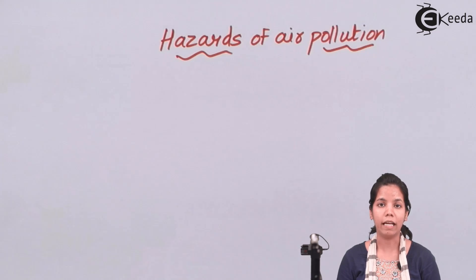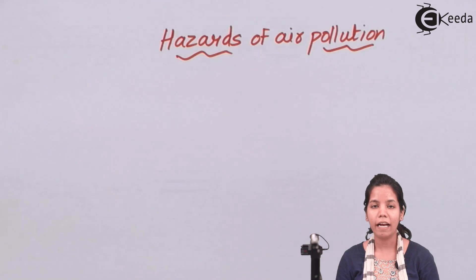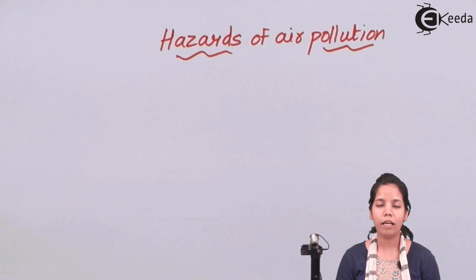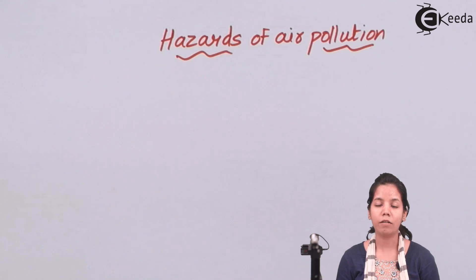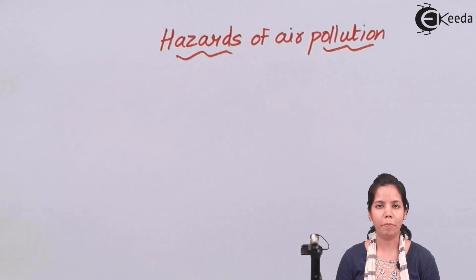Air pollution doesn't come without a cost to be paid by humans. The hazards of air pollution include discoloration of sculptures. For example, the Taj Mahal and the Pyramids of Giza are losing their color, and the Statue of Liberty is losing its paint color — all due to air pollution.